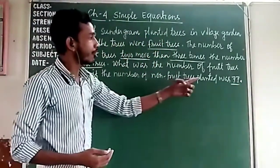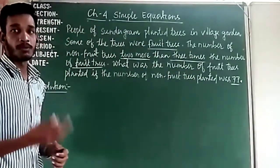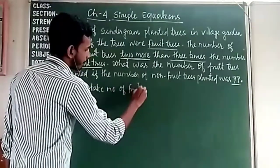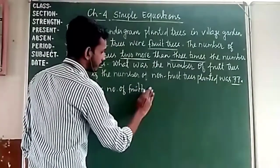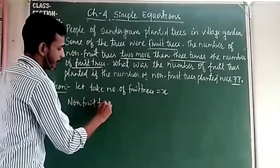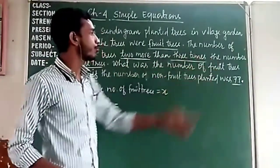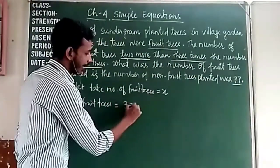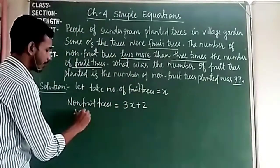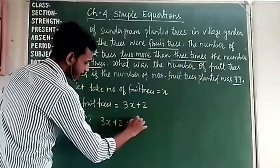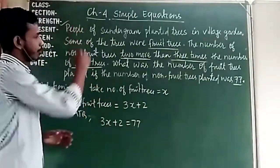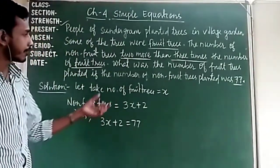If the number of non-fruit trees was 77, what is the number of fruit trees? We don't know the number of fruit trees, so let fruit trees equal x. Non-fruit trees equal 3 times x plus 2, and this equals 77. So the equation is: 3x plus 2 equals 77. Just try to understand what is given and set up the equation accordingly.